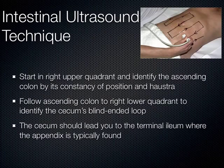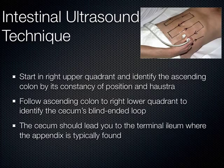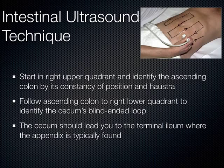What we do is this technique called mowing the lawn, where you start in the right upper quadrant and you can see the ascending colon there. The ascending colon is always in the right upper quadrant — it's got haustra. You can identify that on ultrasound when it's filled with fluid. You follow that ascending colon down to the right lower quadrant, and that's where you expect to see the cecum with its blind-ended loop, which brings you to the terminal ileum where the appendix juts off.